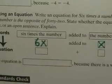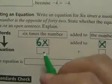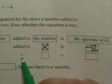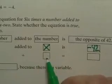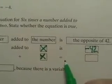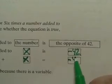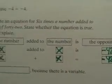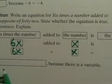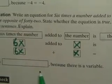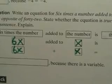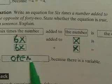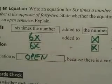Is the opposite of 42. The opposite of 42 is negative 42. Okay, so now let's write our equation. So we have 6X added to as a plus. The number is X equals negative 42. So 6X plus X equals negative 42. Is this, this equation is what? Because there is a variable. It is open. It's open.